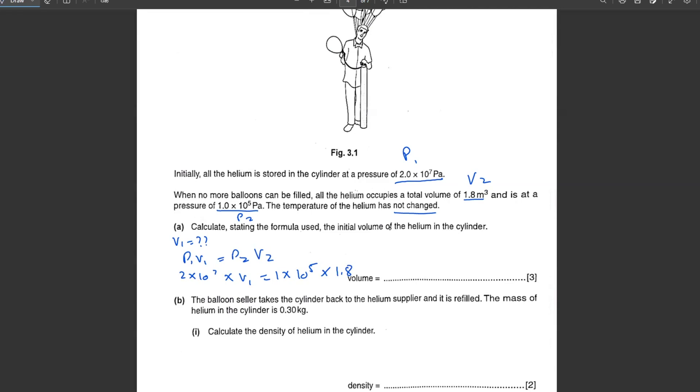1 × 10^5 × 1.8 divided by 2 × 10^7. Volume V1 comes out to be 0.009 meter cube. Simple as that.